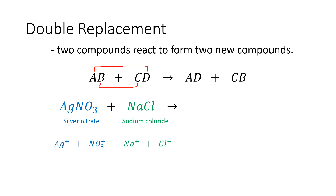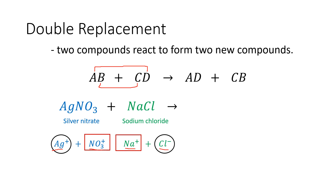Silver nitrate is formed by the combination of silver and the polyatomic anion nitrate, while sodium chloride is formed by the combination of sodium and the anion chloride. So in this situation, silver will combine with the chloride and sodium will combine with the polyatomic anion nitrate.